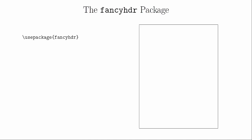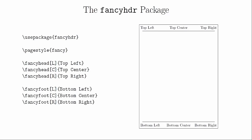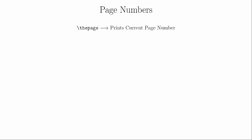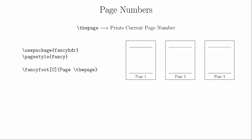Another useful package for customizing your document is the fancyhdr package. If you use the fancy page style, you will get a line across the top and the bottom of the page, and six different regions that you can put text into, which will persist across all pages. The three top regions are specified by defining the fancy head and indicating whether you want to change the left, center, or right part. The bottom is done in the same way using fancy foot. You can use this to set up a generic template for your homework assignments. To print the page number, use the command \thepage.